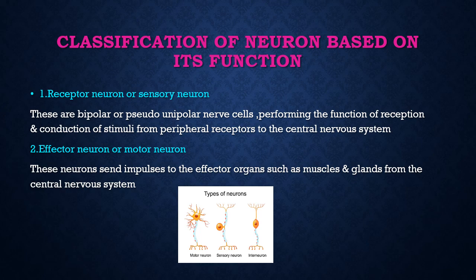Second type is effector neuron or motor neuron. This neuron sends impulses to the effector organ, that is, to muscles and glands — from the central nervous system, impulse will be carried out to the effector organ. Third type is interneuron. The main role of interneuron is to combine the sensory and motor neuron.